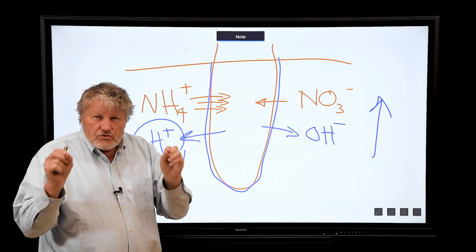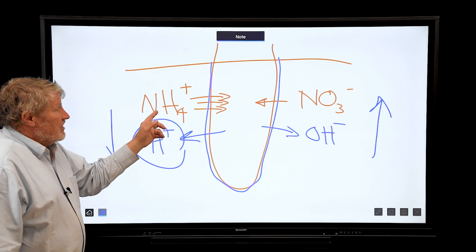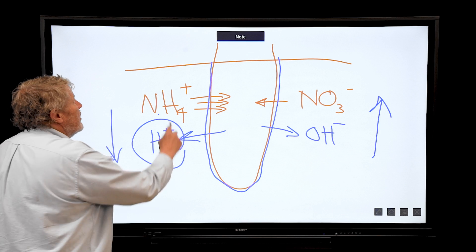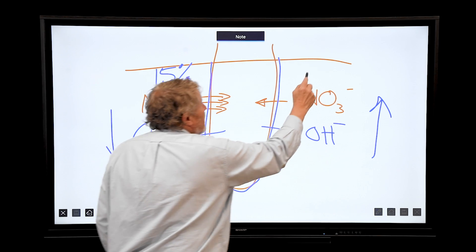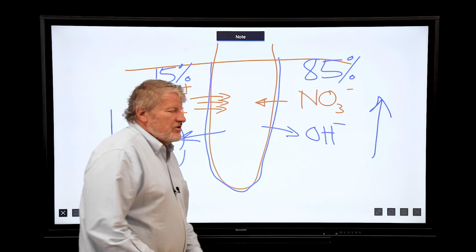So you can control pH by the form of nitrogen you add. We typically around here add about 15% ammonium and 85% nitrate. These are not fixed in stone, but predominantly nitrate, and most systems use a ratio something like that.